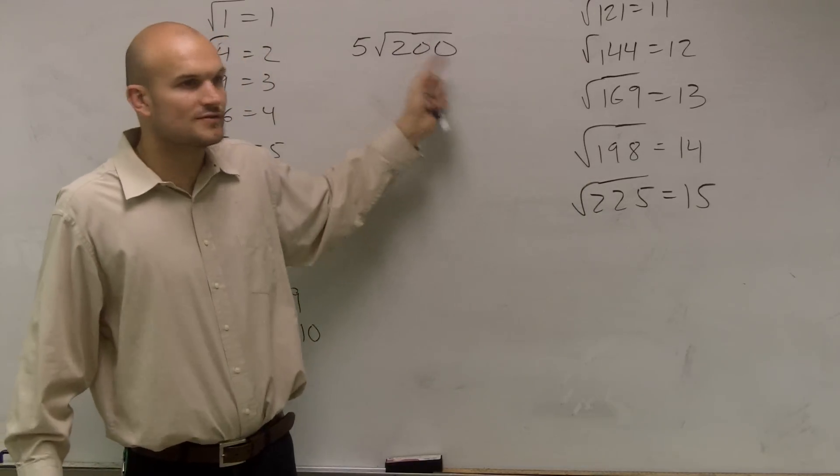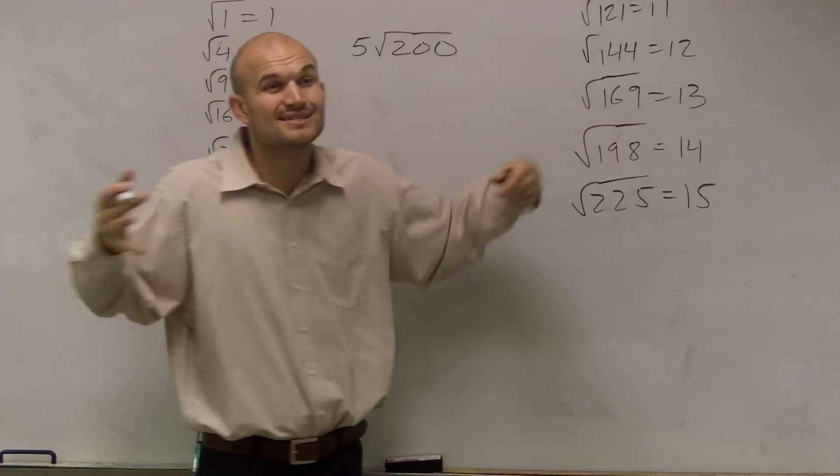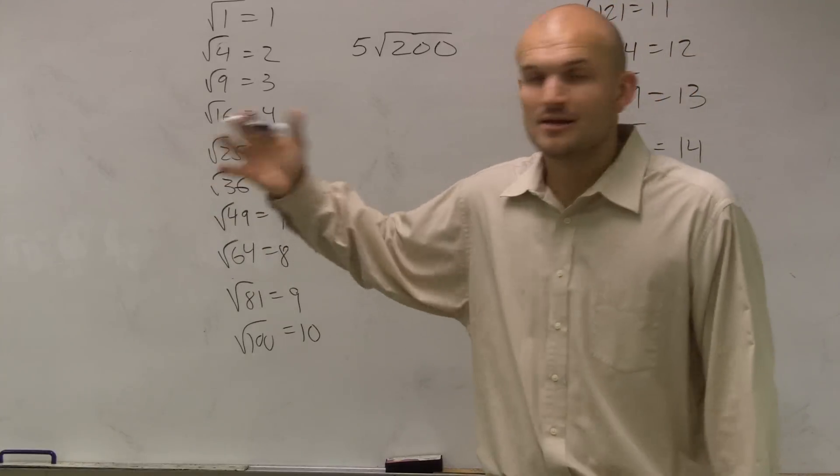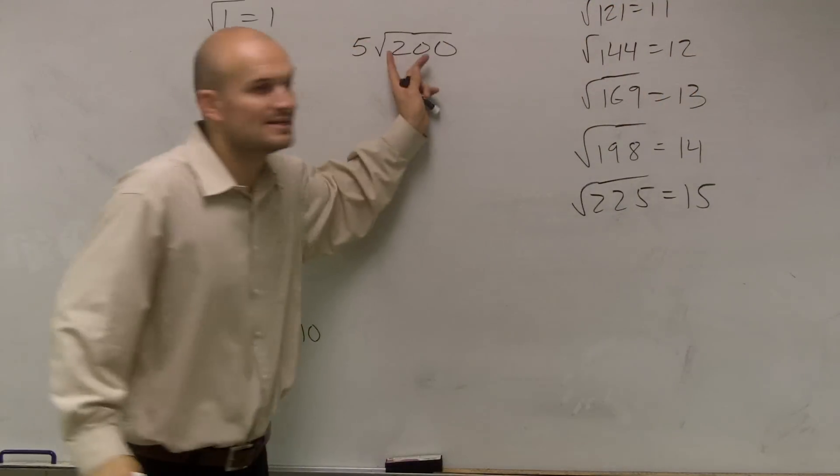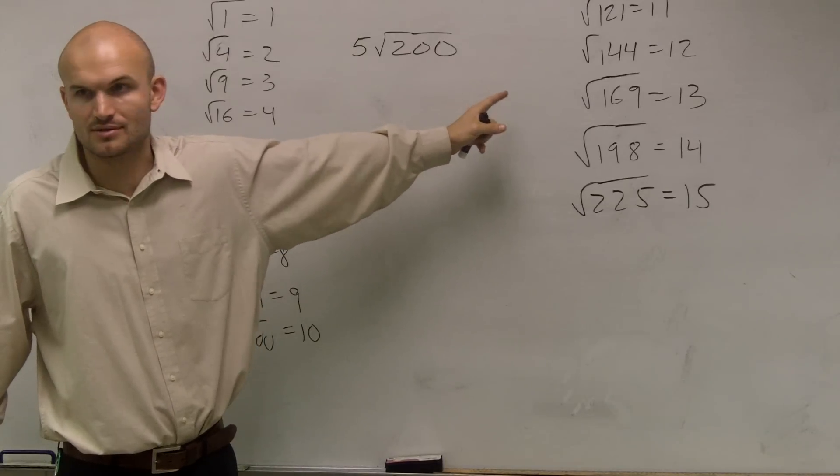So the actual answer to this, square root of 200, is like 14 point something, right? I don't know what it is, but it's a decimal. And it's actually an irrational number. It goes on and on forever. So that's why we don't write square root of 200 in our calculator and give Mr. McGlogan the answer in decimals, okay?